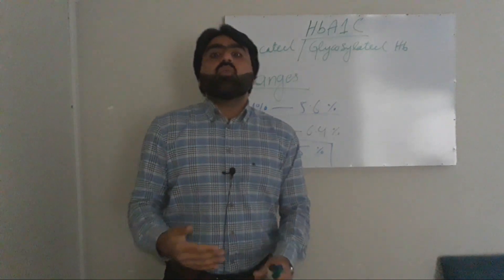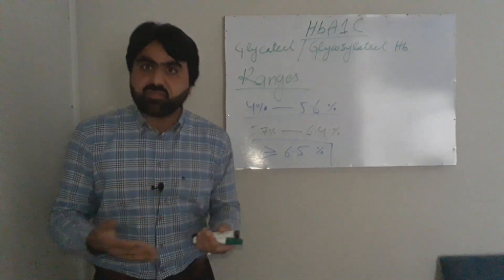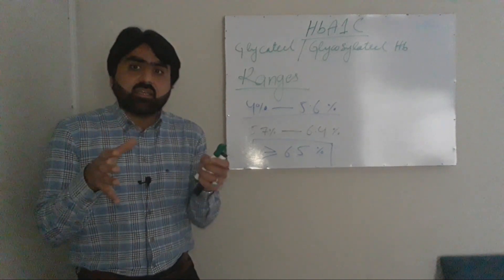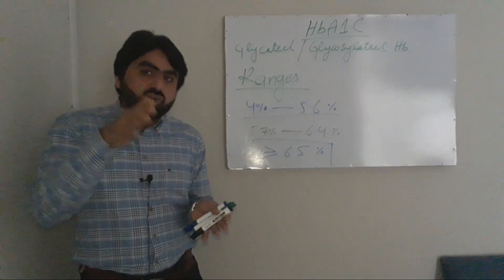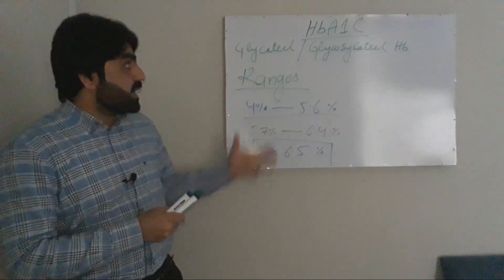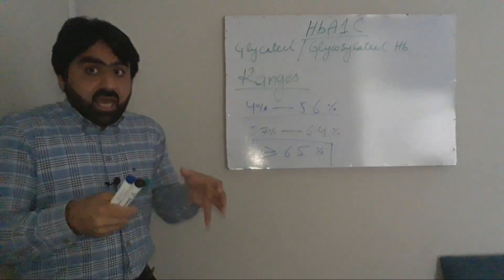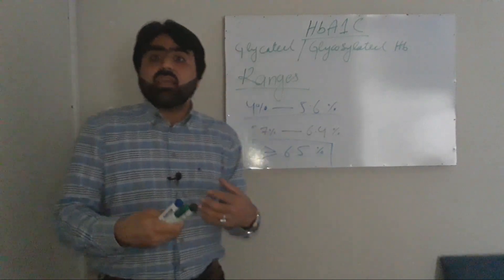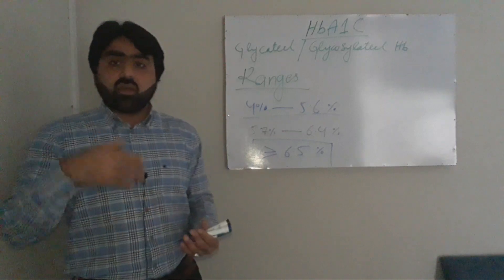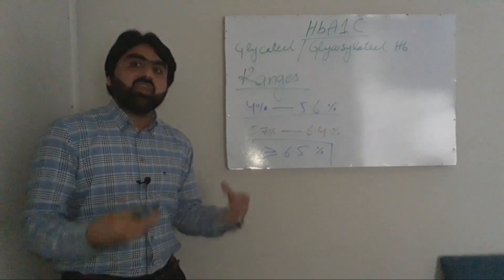Besides this, there are certain other conditions in which the value of HbA1c is affected, so in those conditions we do not rely on HbA1c. For example, in anemia, a person suffering from G6PD deficiency, or sickle cell anemia — because these conditions usually shorten the lifespan of RBCs, and when they shorten the lifespan of RBCs, you can get a false high value of HbA1c. There are also certain populations who carry other variants of hemoglobin, so in those populations we cannot rely on the value of HbA1c.